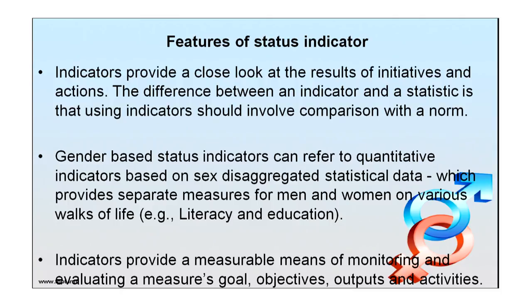Gender-based status indicators can refer to quantitative indicators based on sex-disaggregated statistical data, which provides separate measures for men and women on various walks of life — for example, literacy and education. Indicators provide a measurable means of monitoring and evaluating measures, goals, objectives, outputs and activities. For collecting and deducing indicators, there are two main approaches: the quantitative approach and the qualitative approach.